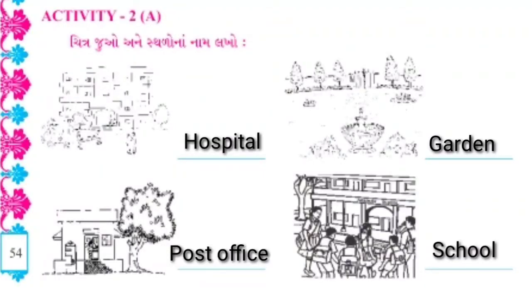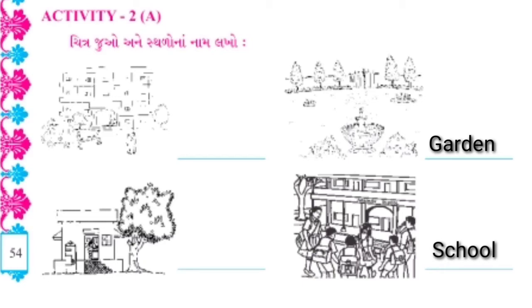Activity 2A. થોડો પોસ્ટ ઓફિસ, ફોર્થ એન્ડ લાસ્ટ સ્કૂલ — પીક્ચર પરથી તમને ખ્યાલ આવે છે કે આ કઈ જગ્યા છે.